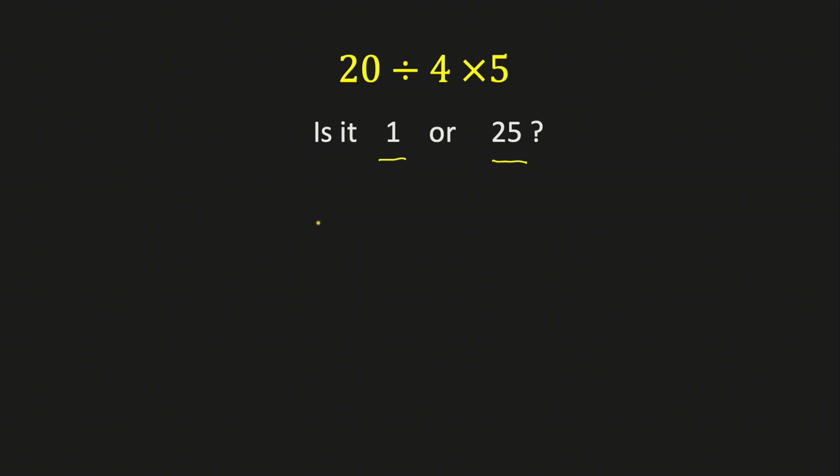Do we take 4 times 5 and get 20 and then take 20 divided by 20 to get 1? Is that the right answer? No, it's not.